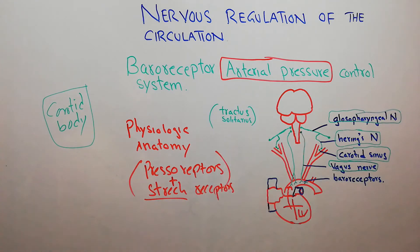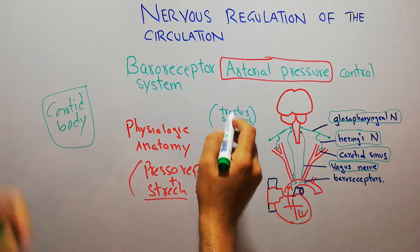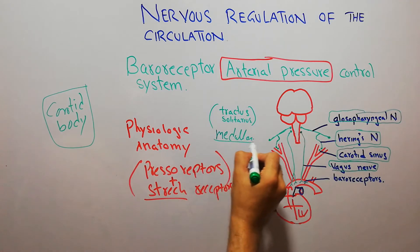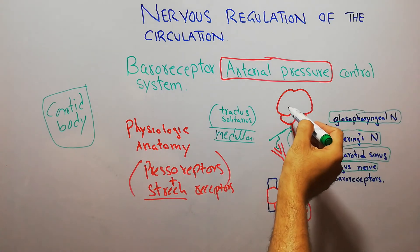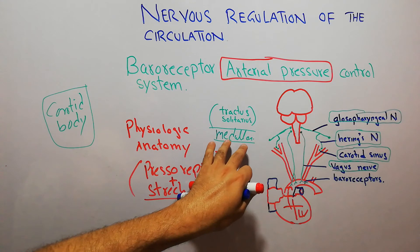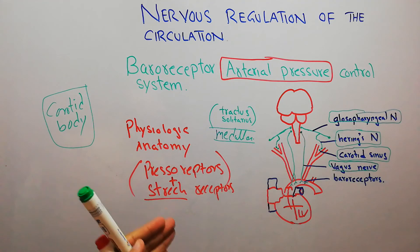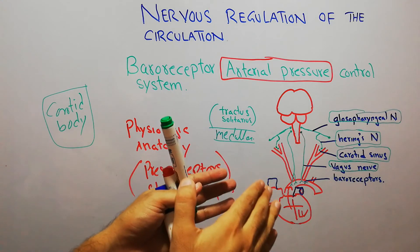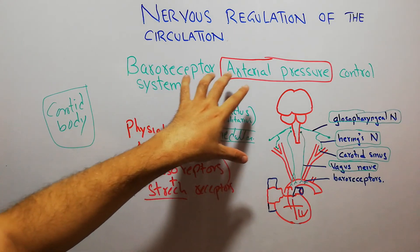In the brain, the signals go to the medulla. The specific area in the medulla which receives the signal is known as the tractus solitarius. Signals collected from all the blood vessels are taken to the tractus solitarius in the medulla. Once the signals arrive at the tractus solitarius, it analyzes what kind of signals are coming from the blood vessels and decides whether the arterial pressure needs to be decreased or increased.